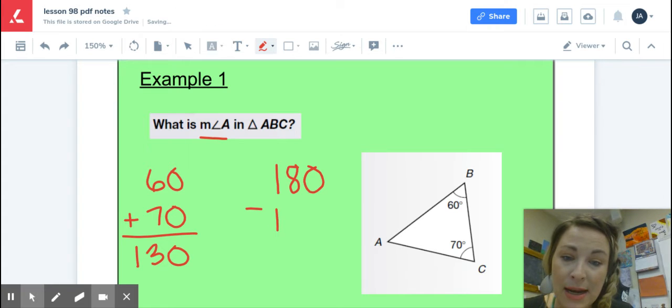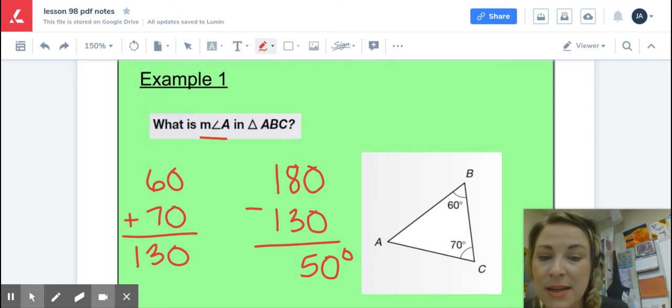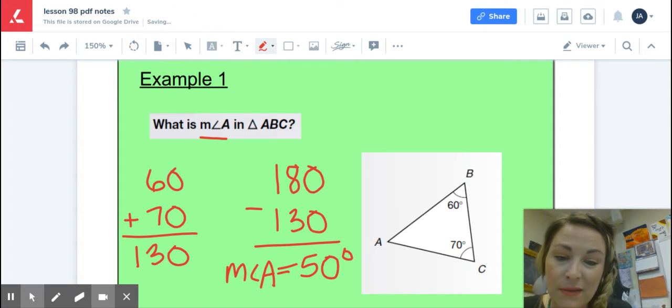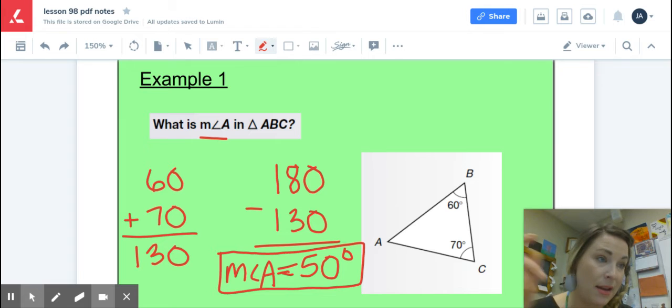So 180 minus 130 degrees leaves me with 50 degrees. There's my little degrees. And actually, if I wanted to be really accurate, the best way to label this answer is, the measure of angle A is, that's supposed to be an equal sign, 50 degrees. Sorry about that. I'm still figuring out the stylus pen. So the measure of angle A, in this case, is 50 degrees.